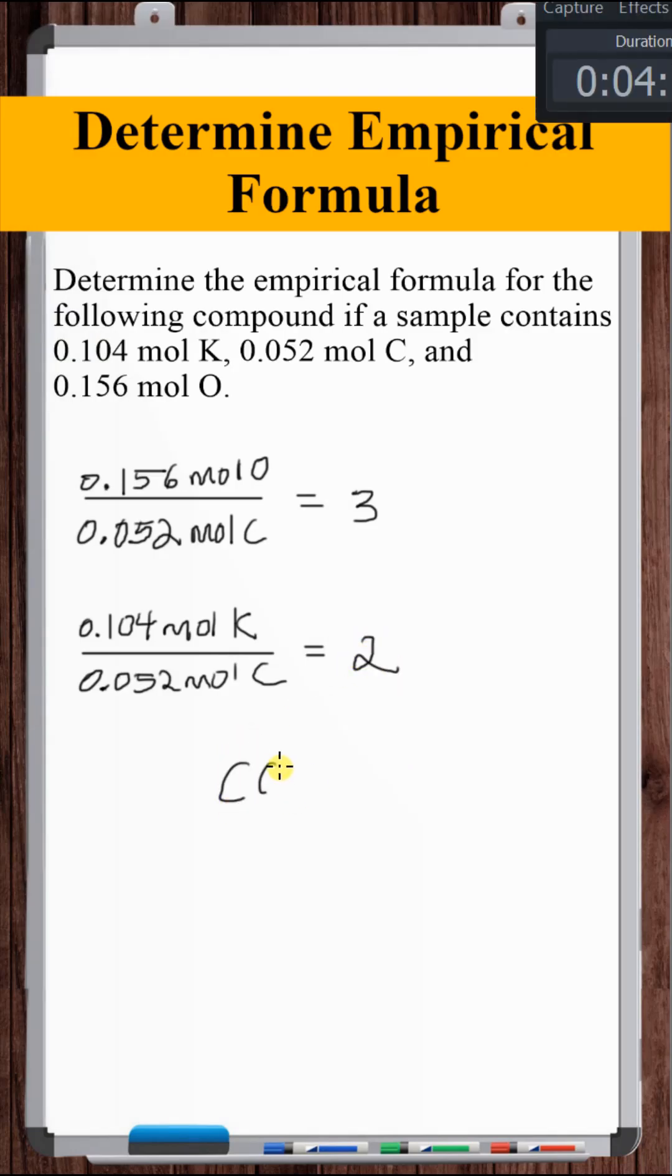So for every one part carbon, we've got three parts oxygen and two parts potassium. So this is correct, but let's go ahead and put the metal out front and the non-metals on the right.